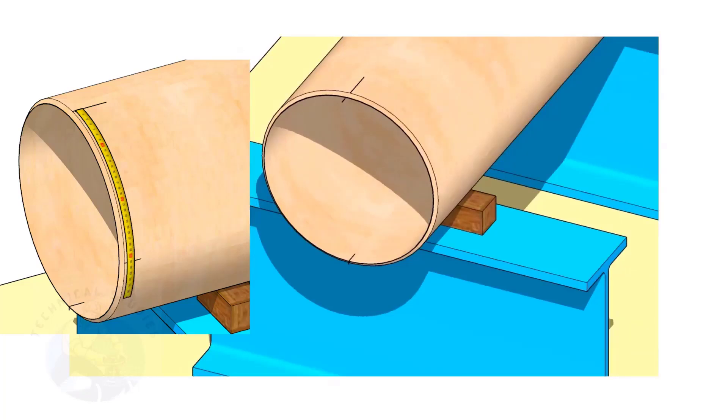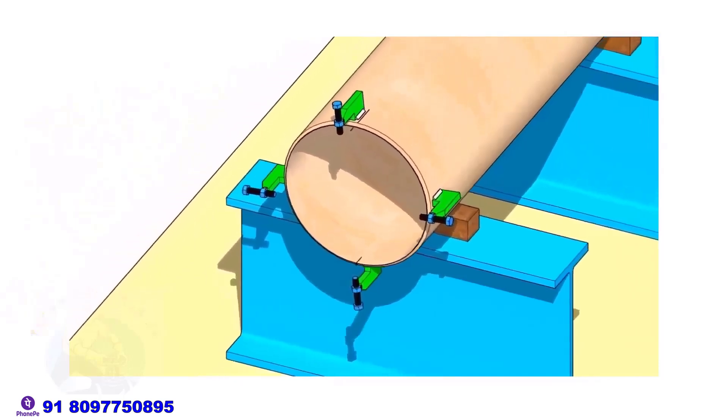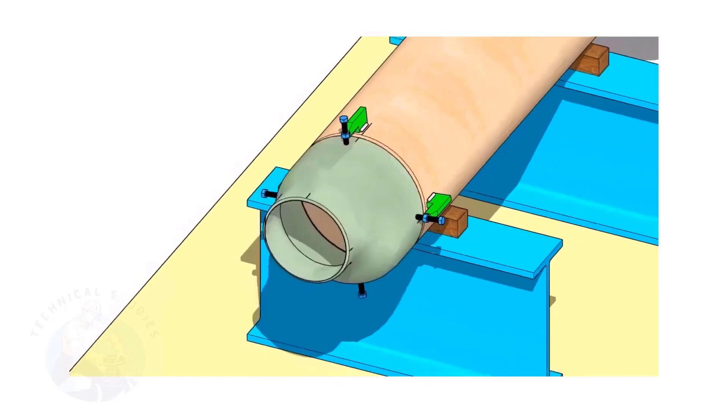Mark the quarter circumference on both sides of the pipe. If you don't have a pipe aligning clamp, tack weld four numbered jack bolts 90 degrees apart as shown.